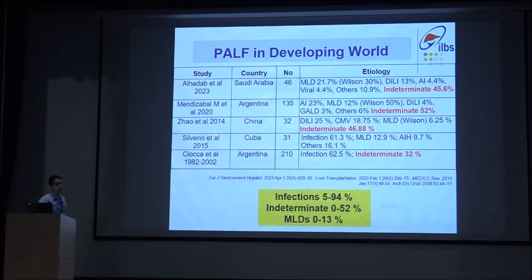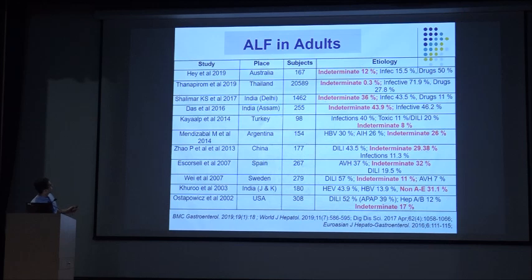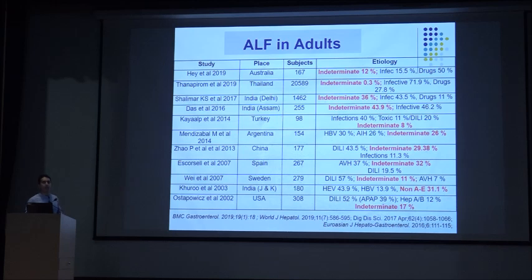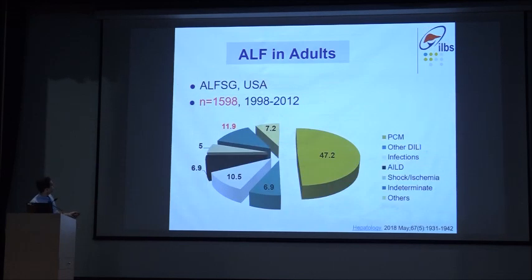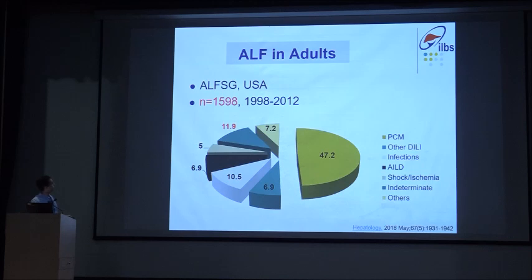In the adult literature, prevalence varies widely from 0.3 percent to almost 50 percent. Interestingly, some Indian studies show slightly higher prevalence, even though we would expect lower rates given the high burden of infections. From AIIMS, with 1,400 patients, almost one third were still indeterminate. The largest ALF study group from America, publishing in 2018 with 1,600 patients, had a prevalence of 11.9 percent, which is relatively lower.